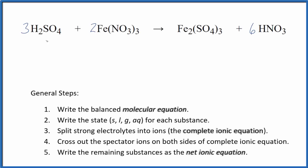Let's balance the net ionic equation for H2SO4 plus Fe(NO3)3. We have sulfuric acid and iron(III) nitrate. The first thing we need to do is balance the molecular equation.